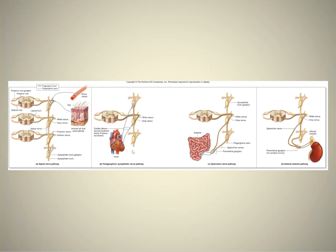The sympathetic nerve pathway is similar, but the preganglionic axon travels to a different level of the sympathetic chain ganglion — either superior or inferior to where it came out of the spinal cord. Then the splanchnic nerve pathway.